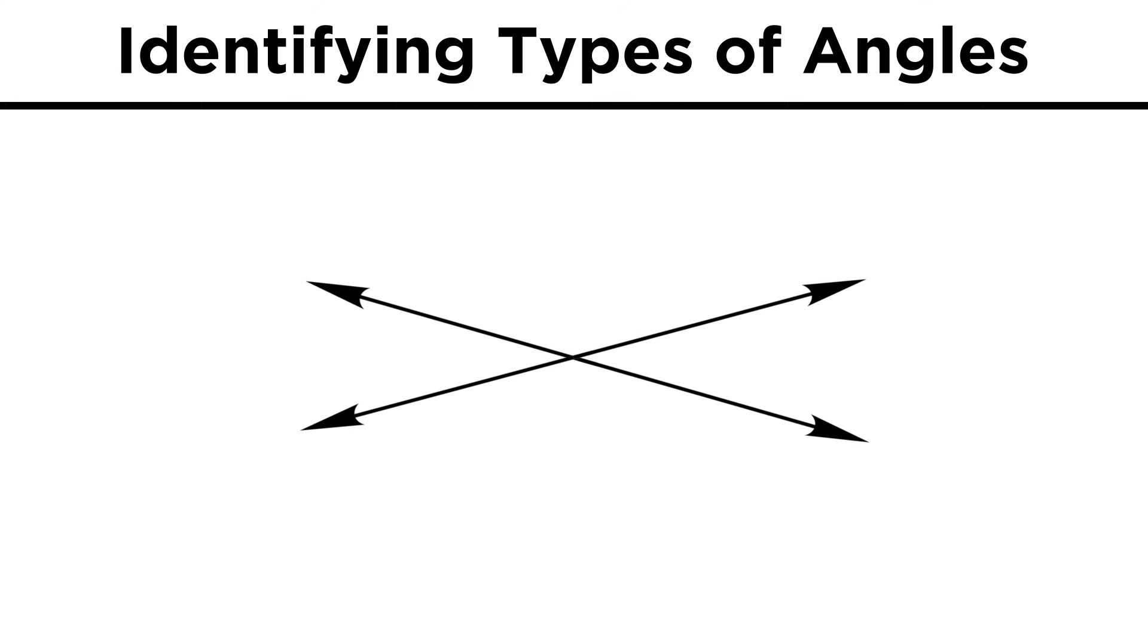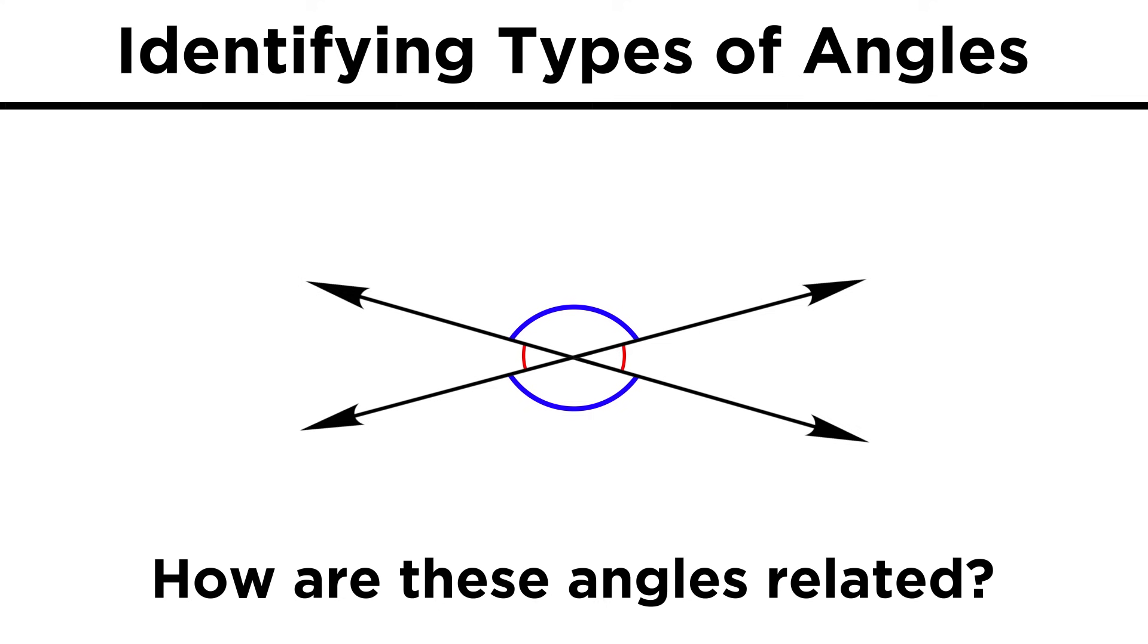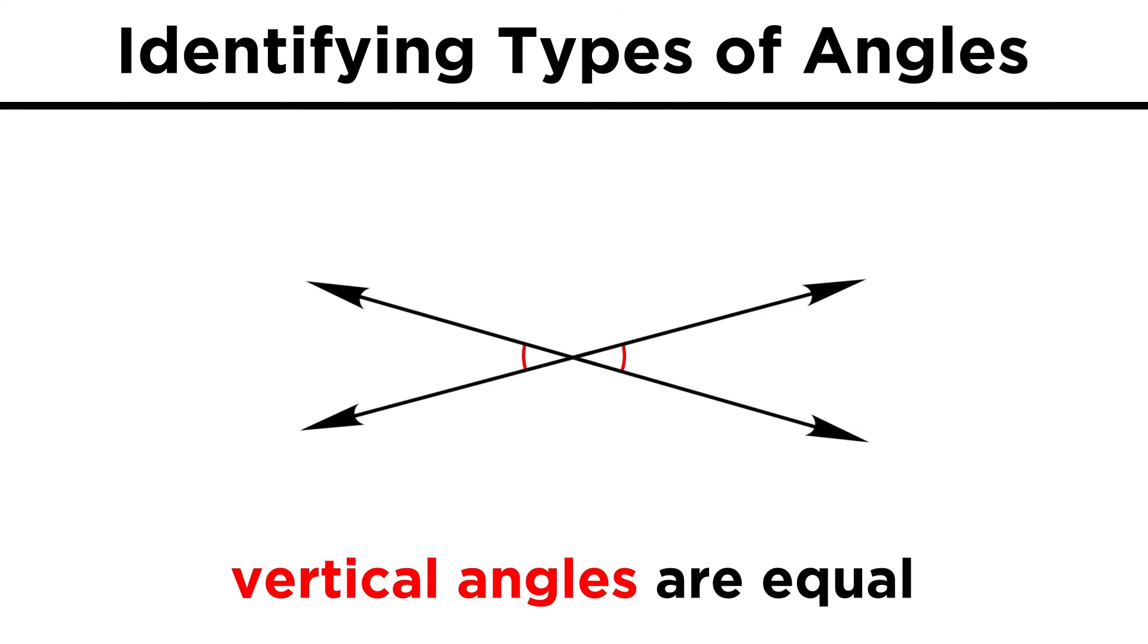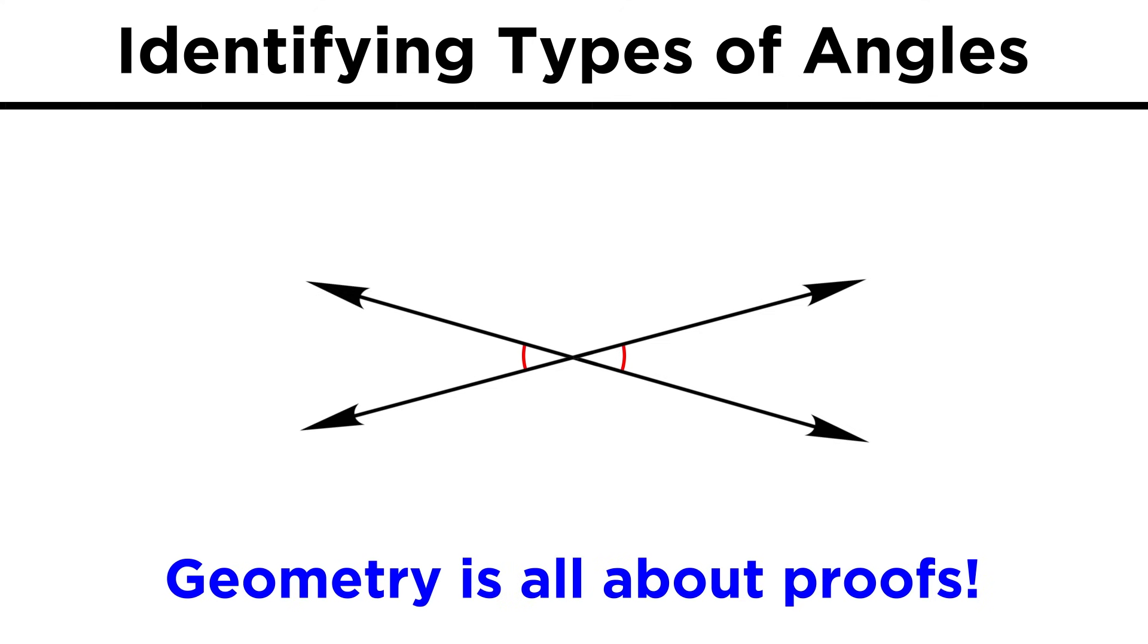Now, instead of two rays, let's use two lines. If these lines cross, we generate four angles. What are the relationships of these angles? First, we can examine the angles that are directly opposite one another, like these two. These are called vertical angles, and they are always equal to one another. This seems intuitive by looking at the diagram, but geometry is all about rigorously proving things that might seem obvious, though we don't know why.